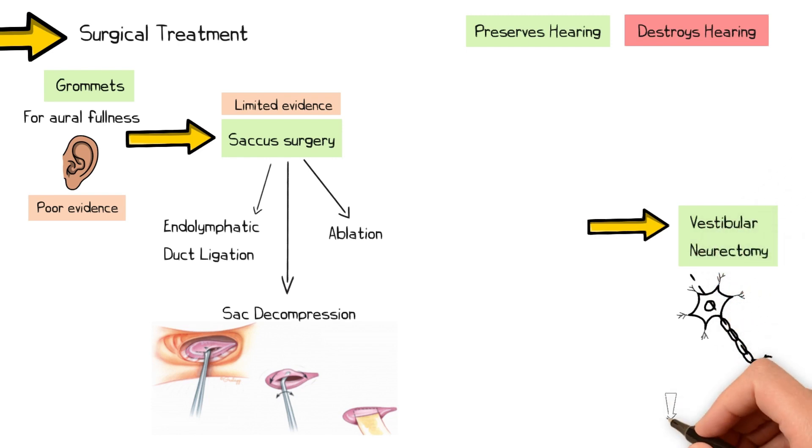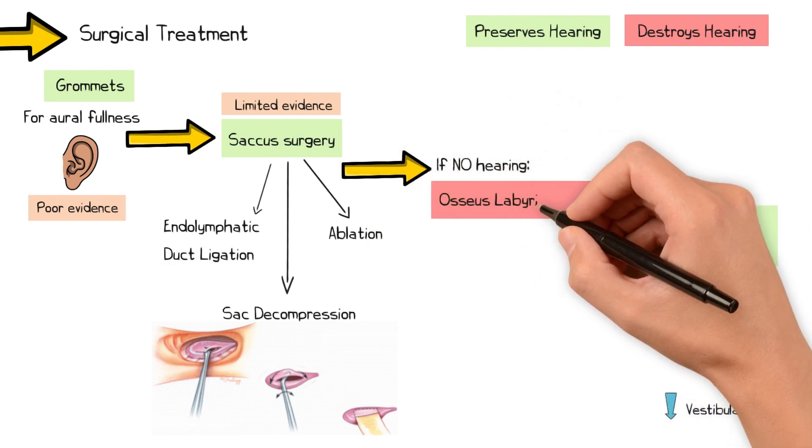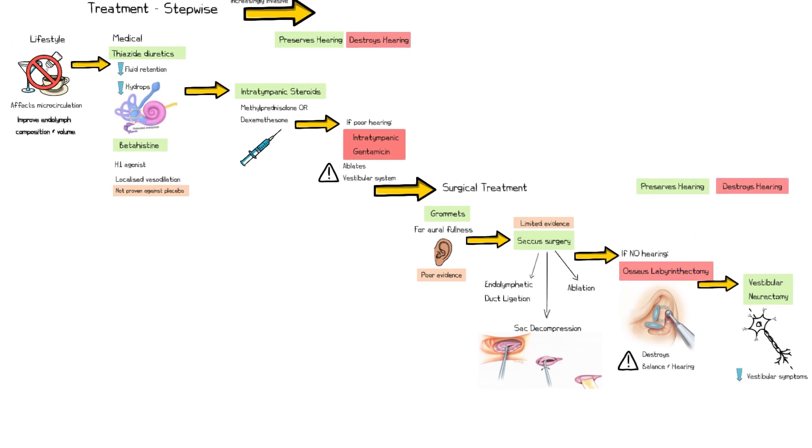Finally, dividing the vestibular nerve can reduce vestibular symptoms while preserving hearing. In cases where the hearing is poor, you can consider an osseous labyrinthectomy. This involves destroying the organ of balance and hearing, and should only be considered when there is no serviceable hearing.